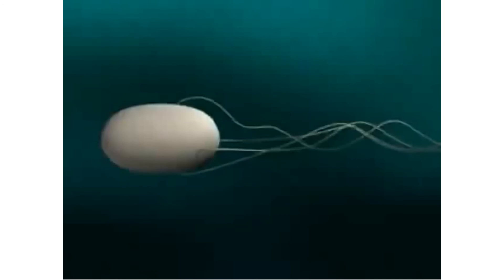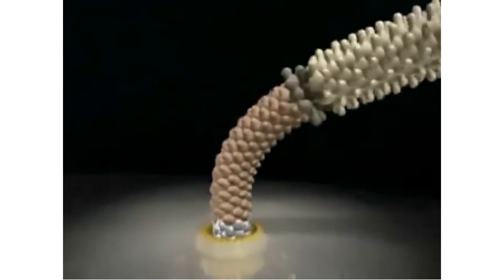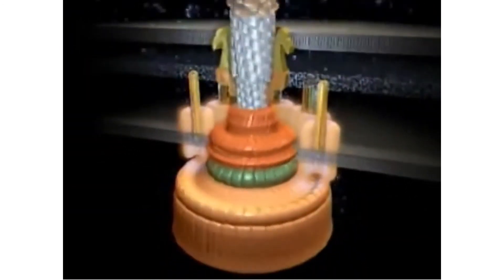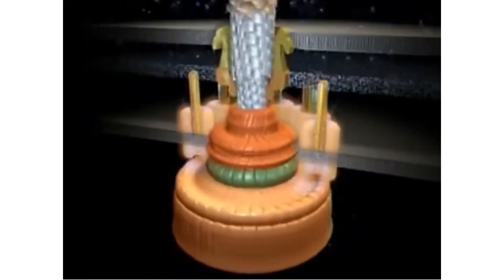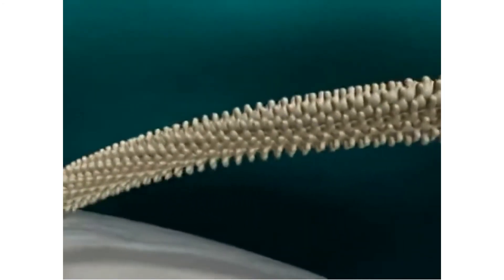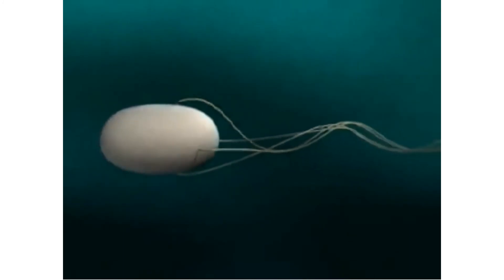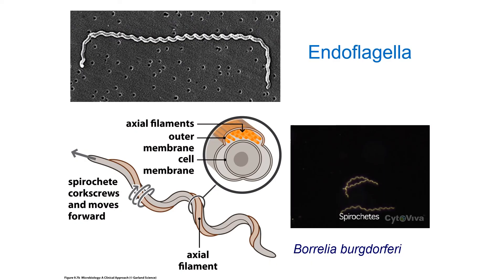The bacterial flagellum is a remarkable machine. Here you're seeing a polytrichous bacterium — one with several flagella. We can see how the flagellum is embedded within the cell wall; this is the electric motor, with channels through which hydrogen protons flow, causing the motor to spin and in turn causing the flagellum to spin.